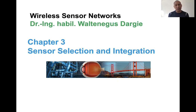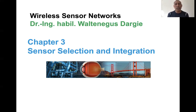We have seen the different subsystems of a wireless sensor node, beginning from the sensing subsystem, the processing subsystem, and the communications subsystem, and how these subsystems can be interconnected with one another using different types of communication buses. Today we are going to see how we can measurably qualify the quality of a sensor, because the quality of information we can extract from a physical environment depends on the quality of the sensor and how well it picks up aspects of the physical environment.